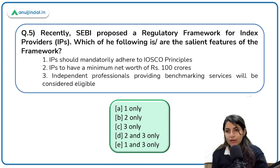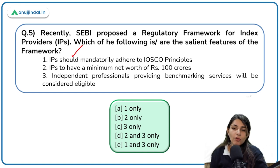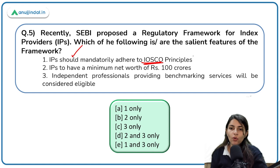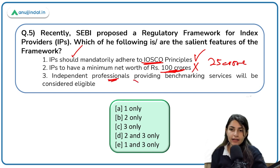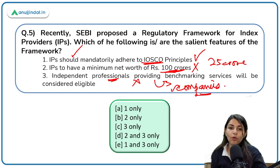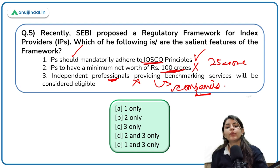Recently, SEBI proposed a regulatory framework for index providers. Which of the following are salient features? Index providers should mandatorily adhere to IOSCO principles — correct. IPs to have minimum net worth of 100 crore — incorrect; the correct answer is 25 crore. Independent professionals providing benchmarking services will be considered eligible — incorrect, because only companies registered under the Companies Act are eligible. Independent professionals who are registered as companies will be eligible under this framework.